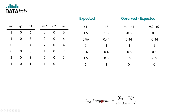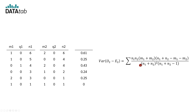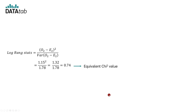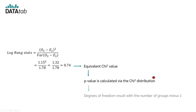Now we can calculate the so-called log rank statistic. We can take either the values of group 1 or group 2. O2 minus E2 is calculated by adding up these values, which gives 1.15. The variance is calculated with the corresponding formula — we calculate each row's expression and then sum them up. In our case, we get 1.78. Now we can calculate the log rank statistic, which in our case gives 0.74. The log rank statistic is equivalent to a chi-square value, so the critical p-value can be determined via the chi-square distribution. The required degrees of freedom are given by the number of groups minus 1.